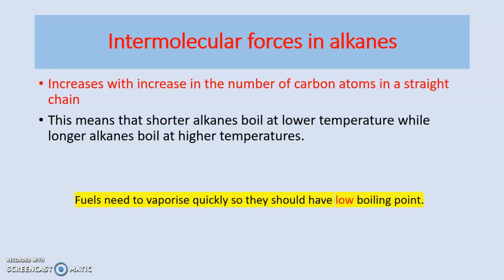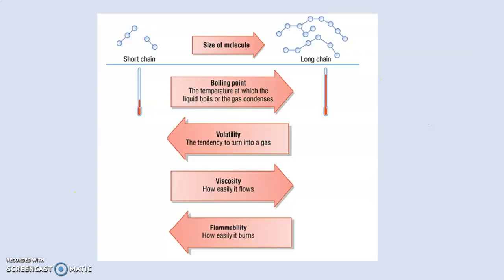A good fuel needs to vaporize quickly, so it should have a low boiling point. Shorter alkanes have lower boiling points, therefore shorter alkanes are used as fuels. So boiling point is the temperature at which the liquid boils or the gas condenses. Shorter alkanes have low boiling points; longer alkanes have higher boiling points — boiling point increases along the chain length.